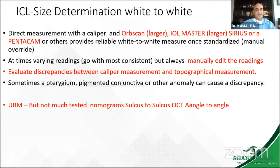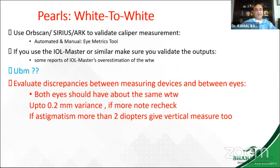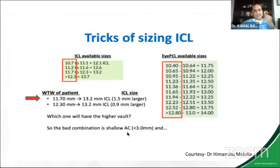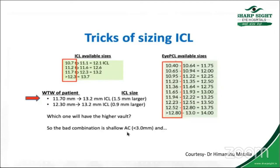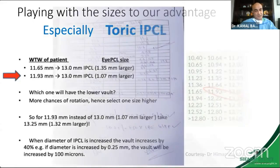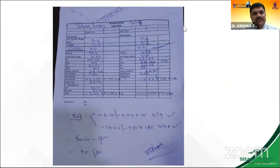White-to-white measurement is one of the most important hallmarks. You can use different machines, but standardize your nomograms to whatever machine you're using — I personally am very happy with Sirius measurements, having done more than 2,000 cases with it. If there's a variance of more than 0.2 mm between both white-to-white readings, check again. For a toric IPCL, I would recommend going for a slightly larger size because these lenses fit snugly and are less prone to rotation.